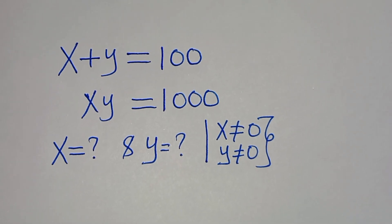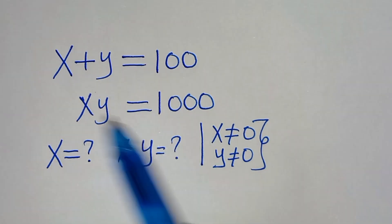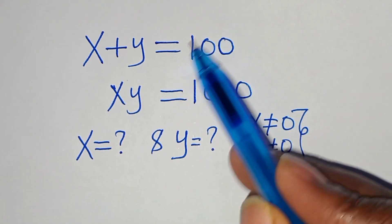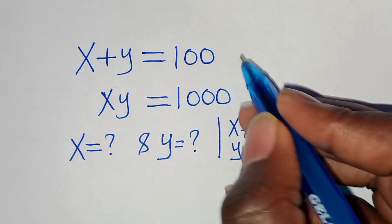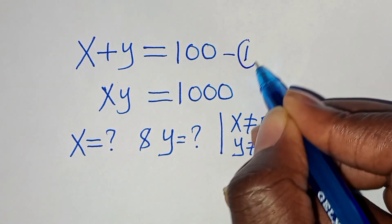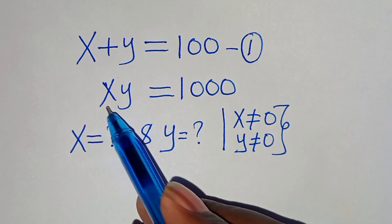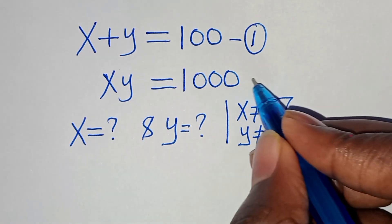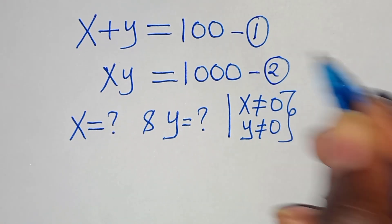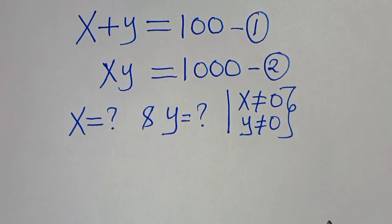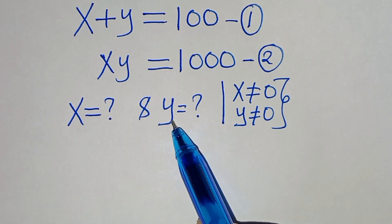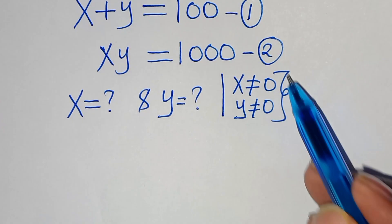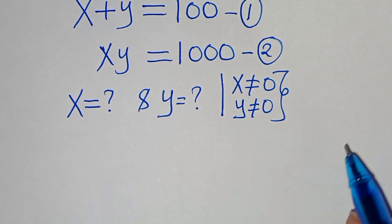Hello everyone, you're welcome to solve this nice algebra problem, which is x plus y equals 100 — let's call this equation 1 — and we have that x times y equals 1000 — let's call this equation 2. What is the value of x and what is the value of y, given that x is not equal to 0 and that y is not equal to 0.